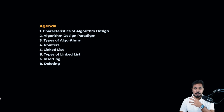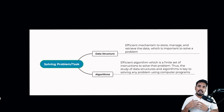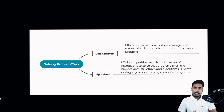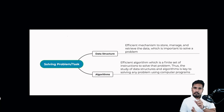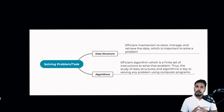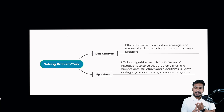Before getting into all these things, let's start with the basics. Whenever we are solving a problem or a particular task, there are two divisions. One is data structures — the efficient mechanism to store, manage, and retrieve data. In order to solve a problem at the least amount of time, least memory, and higher scalability, the first step is having good data structures.